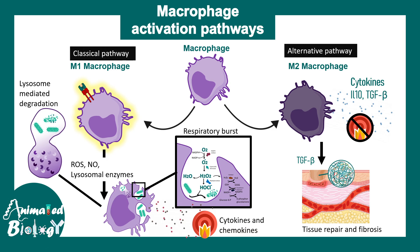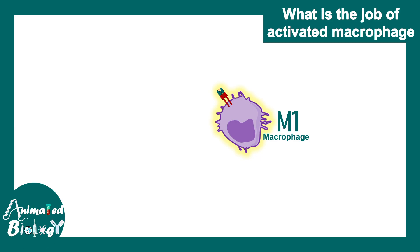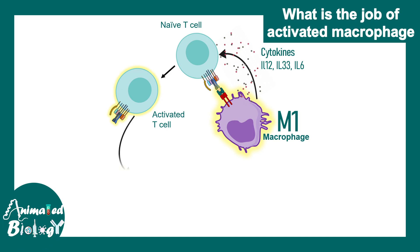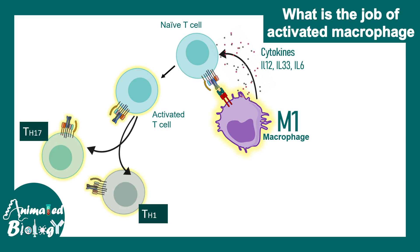Generally M1 macrophages are the key players underlying chronic inflammation. M1 macrophages can activate naive T cells, and these activated T cells can be further influenced by M1 macrophages through several polarizing cytokines such as IL-12, IL-33, and IL-6 — all of which are inflammatory. This finally induces the fate of activated T cells into TH1 or TH17 sublineages, both of which are potent drivers of inflammation.